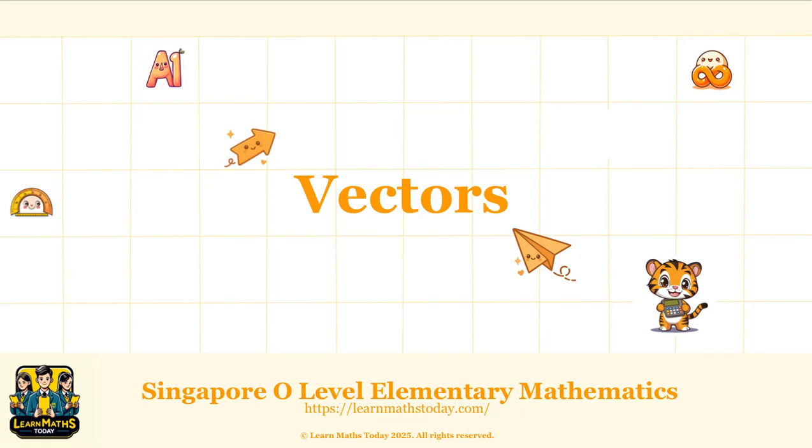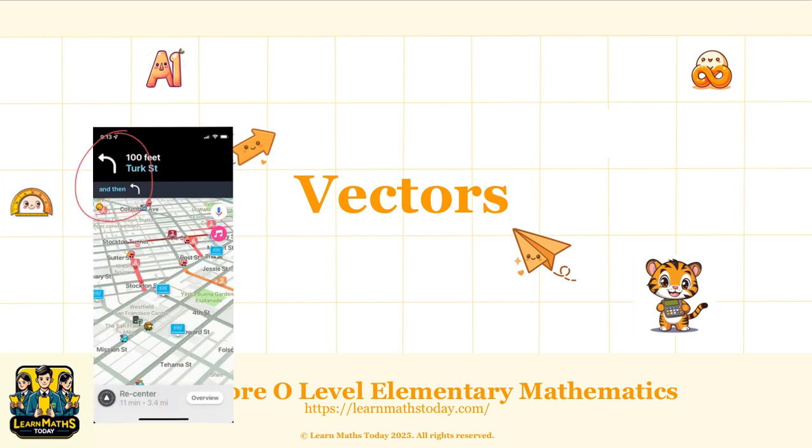Have you ever used Google Maps and seen the little arrow showing you how to walk or drive? The arrow is powered by vectors because it's all about how far you walk, how far you travel, but also which direction you are going.